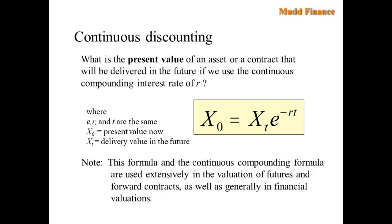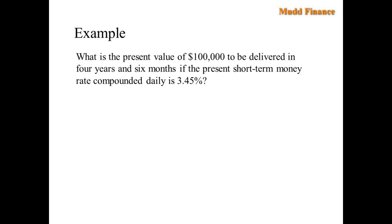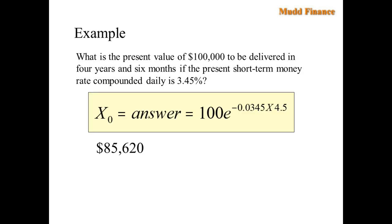With discounting, we ask the question: what is the present value of an asset or a contract that will be delivered in the future if we use the continuous compounding interest rate of R? Here we are asking what is the present value of something where we know its value in the future given an interest rate discount. These are used extensively in the valuation of futures and forward contracts, as well as generally in financial valuations. For example, what is the present value of $100,000 to be delivered in 4 years and 6 months if the present short term money rate compounded daily is 3.45%? And the answer is going to be the present value is $85,620 as we fill in these values here.